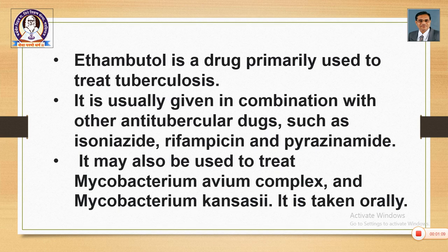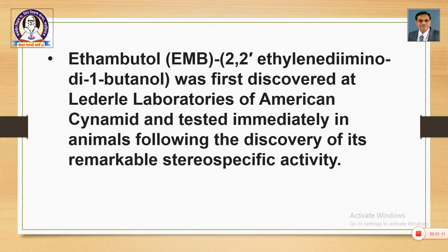This is just an introductory part — what is ethambutol? The name suggests it is a derivative of some structure having ethane and the other part is butanol. So ethambutol is a combination or derivative of ethane and butanol structure. It is abbreviated as EMB.